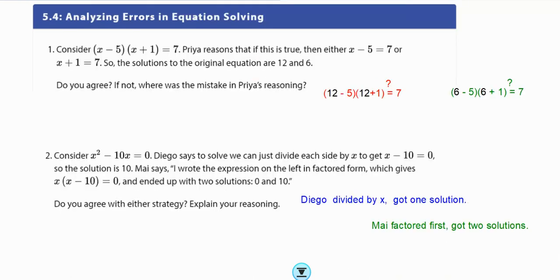The next activity is we're going to analyze some errors. So I think we have Priya, Maya, and Diego are all working on some problems, and we're going to check to see if we can figure out what their errors are. So I want you to hit pause again, read through the question, decide, do you agree? And if you disagree, then think about what went wrong? What was the mistake in Priya's reasoning? Take a minute. Hit pause, and then hit play.